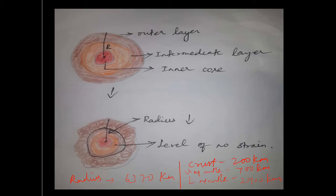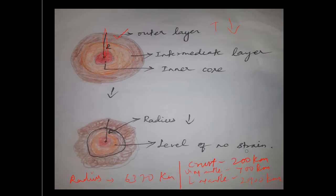In this diagram, we can see the outer layer is getting cold — in the beginning of the process the outer layer cools and temperature decreases at a rapid rate. The radius of the earth is around 6,370 kilometers. The continental crust is around 200 kilometers thick, while the oceanic crust is much less. The upper mantle extends to about 700 kilometers.